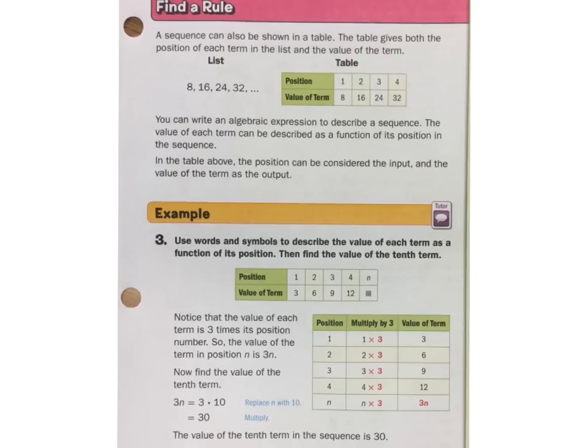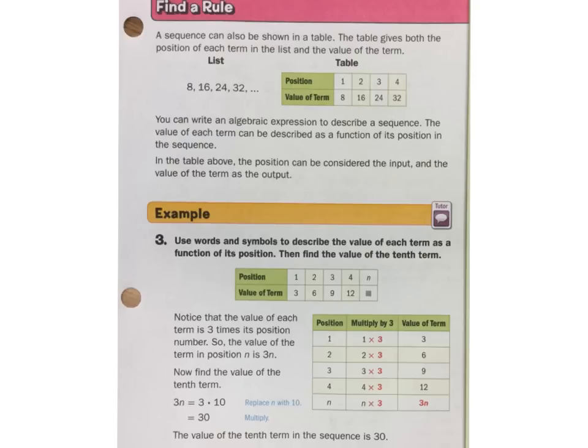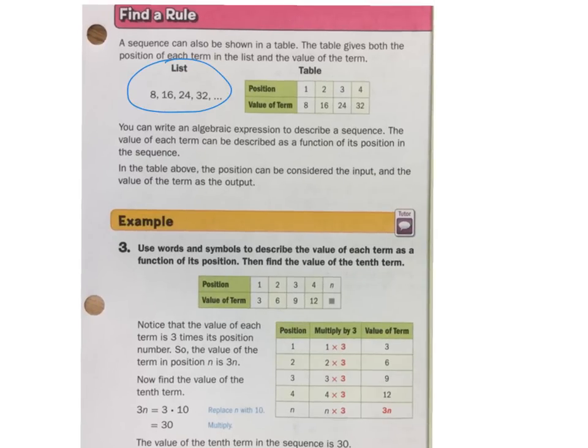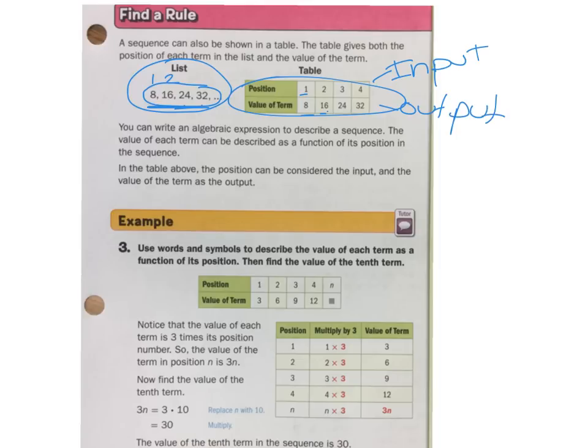Now we're going to find a rule. A sequence can be shown as a list. So you have a list here: 8, 16, 24, 32. So you have a sequence there, or it could be shown in a table. And the position is like the first one is 8, here's number 1. Number 2 is 16, number 3 is 24, and 4 is 32. This is a list, this is into a table. And the position, this is kind of seen as the input, and this is seen as the output.